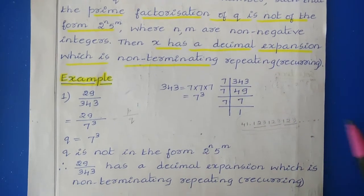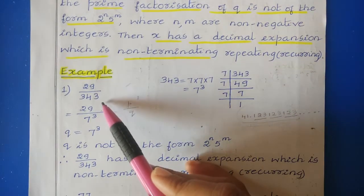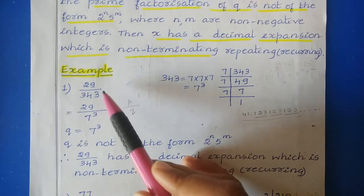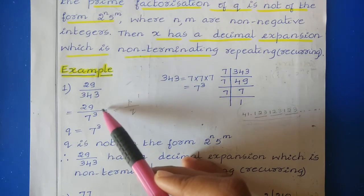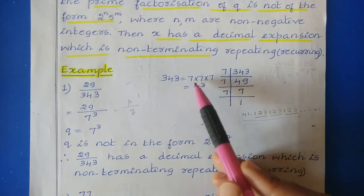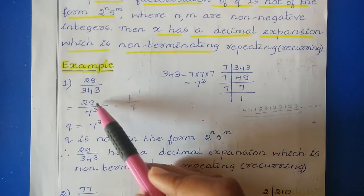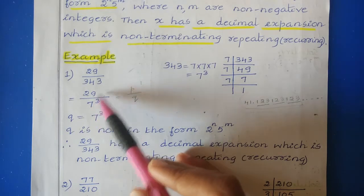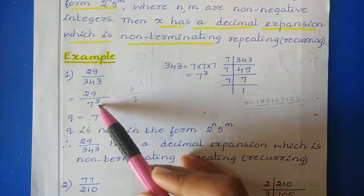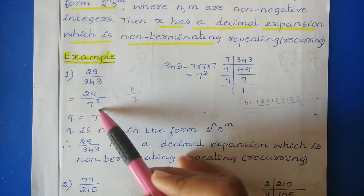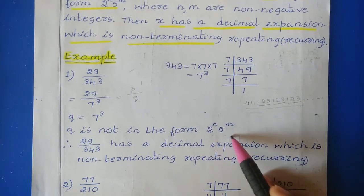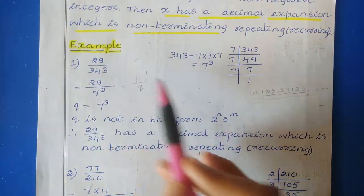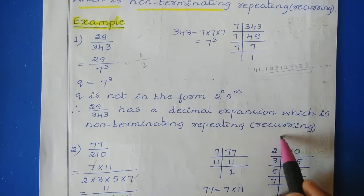Now let us understand this theorem by taking an example. Consider 29 divided by 343. First, let us find the prime factorization of these numbers. The prime factorization of 29 is 29 only, as it is a prime number. Then 343 can be written as 7 into 7 into 7, that is 7 cubed. So we have 29 divided by 7 cubed. Here q, that is 7 cubed, is not in the form 2 to the power n into 5 to the power m. So we can say that this number has a non-terminating repeating decimal expansion.